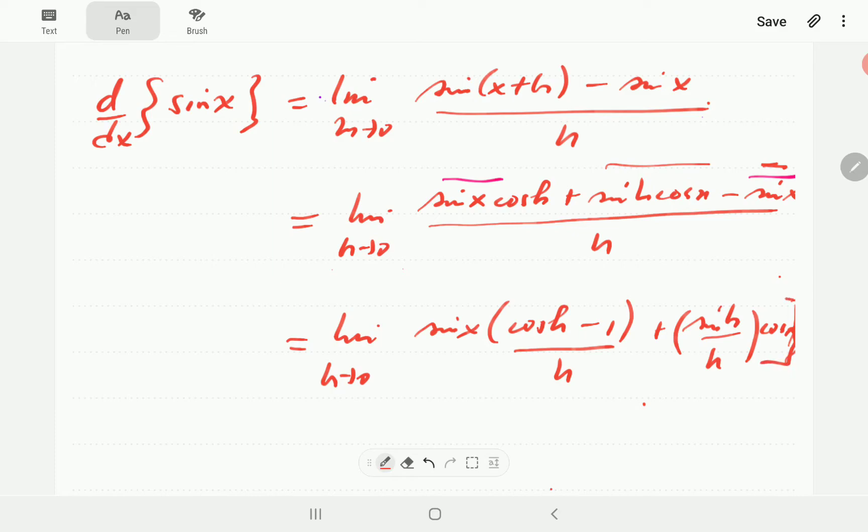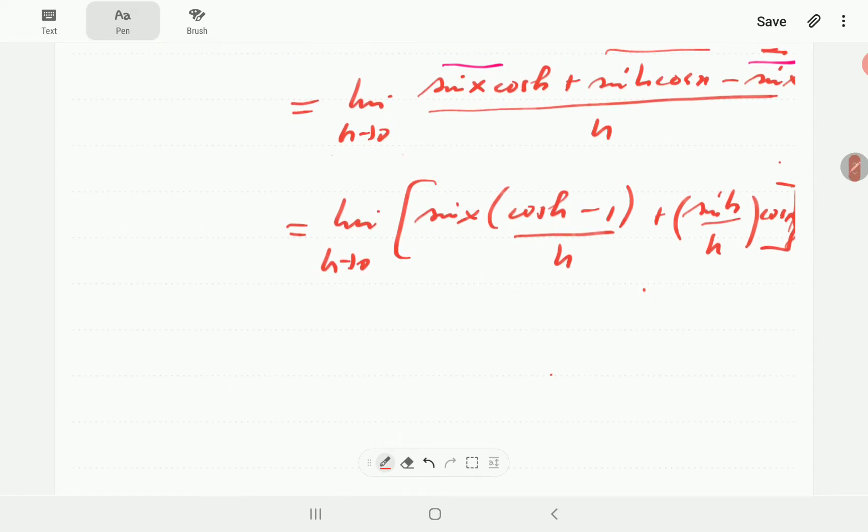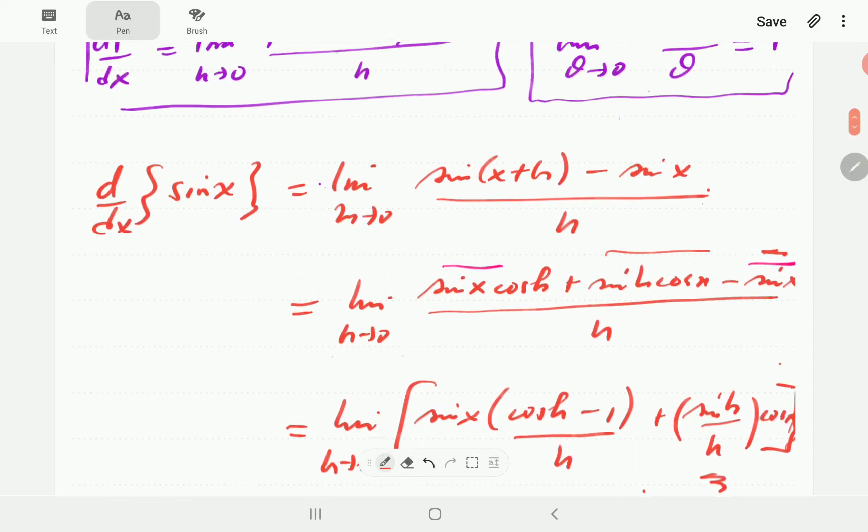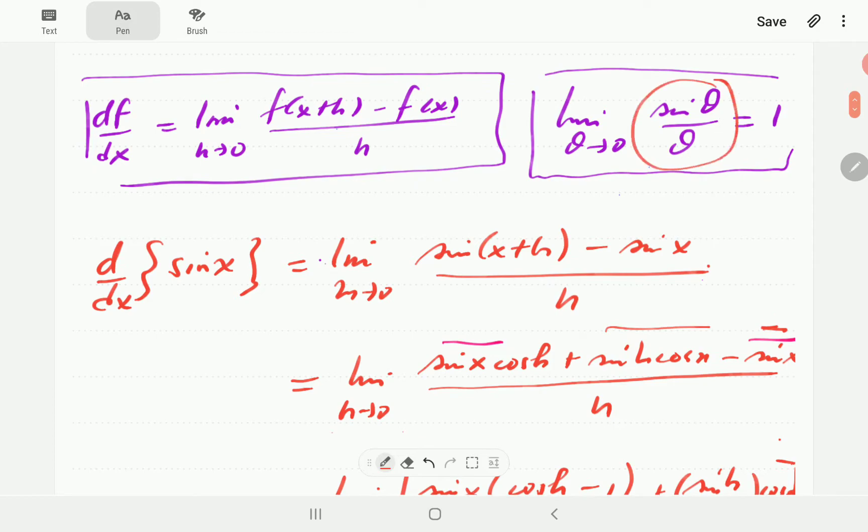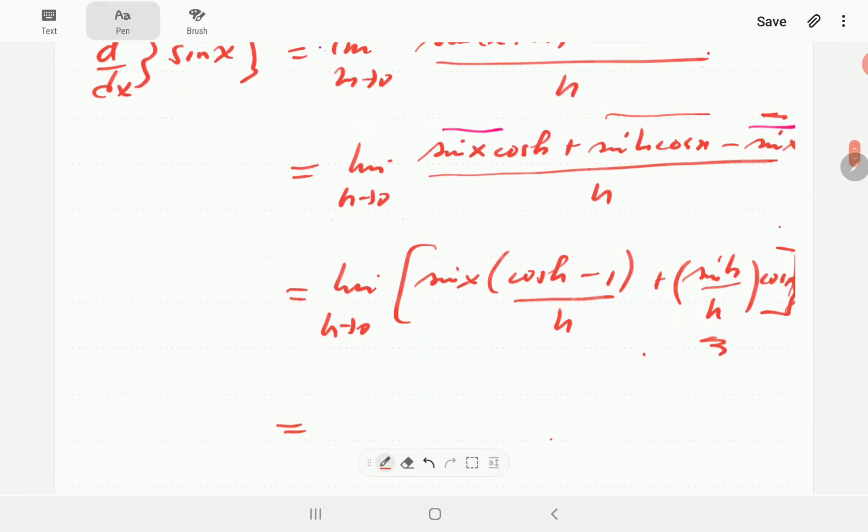Okay, so this term here is the same term as this one. So straight away, we can see that this term is going to go to 1 as h goes to 0. This one actually is the other result of the fundamental limits of trigonometry. This term here goes to 0 as h goes to 0.